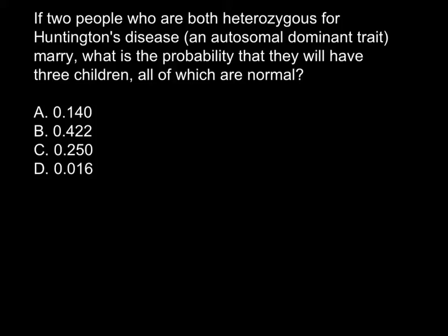If two people who are both heterozygous for Huntington's disease, an autosomal dominant trait, marry, what is the probability that they will have three children, all of which are normal?